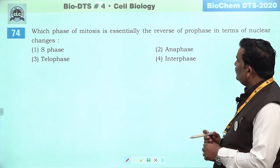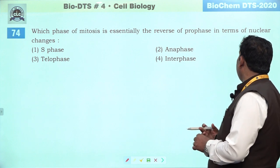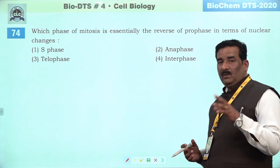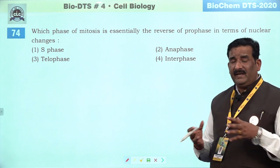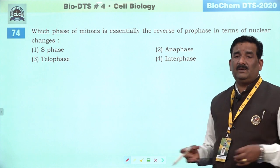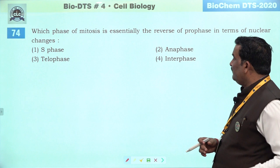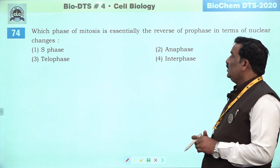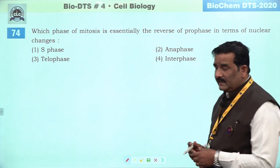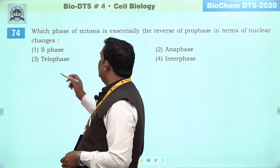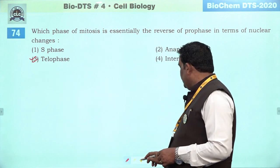Next question: which phase of mitosis is essentially the reverse of prophase in terms of nuclear changes? Jo prophase hoti hai, usmein late prophase ke andar nuclear membrane disappear hoti hai, nucleus disappear hota hai, chromosome ka coiling aur condensation fast level par chalta hai. Toh jab yeh process telophase mein pahunchti hai, toh wahan yeh sab kuch reverse hone lagta hai — reappearance of nucleus and nuclear membrane. Third is the right answer.